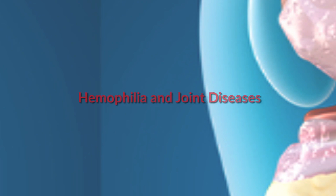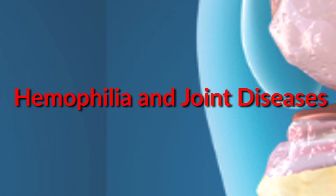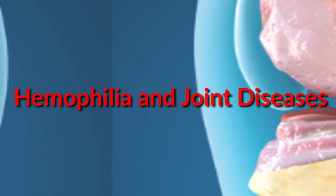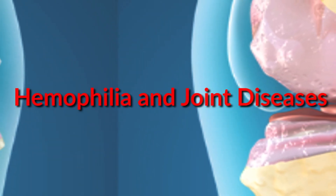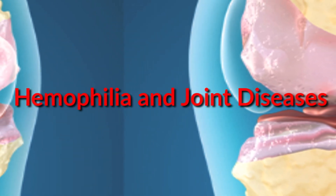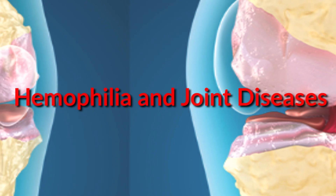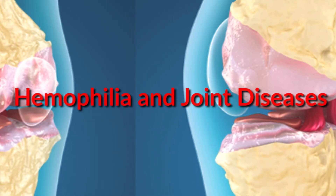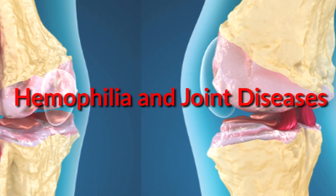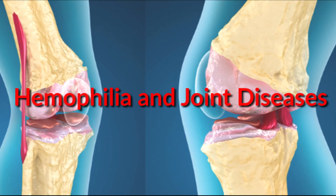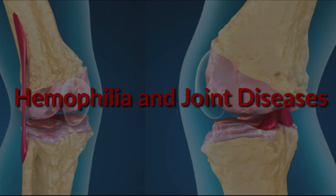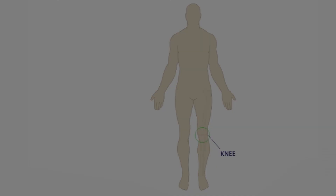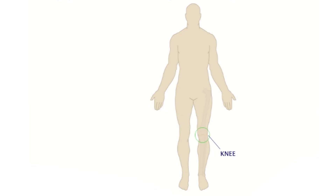Before effective treatments were developed in the late 1960s, people with severe hemophilia died young from bleeding. With effective treatment, life expectancy is nearly normal, but repeated bleeding episodes can cause disabling arthritis in the joints.